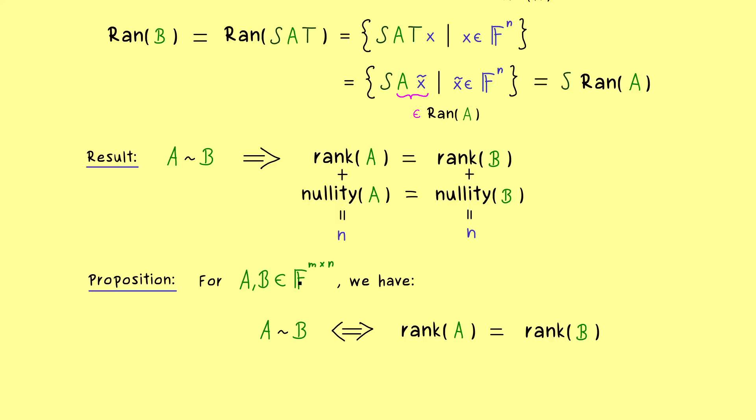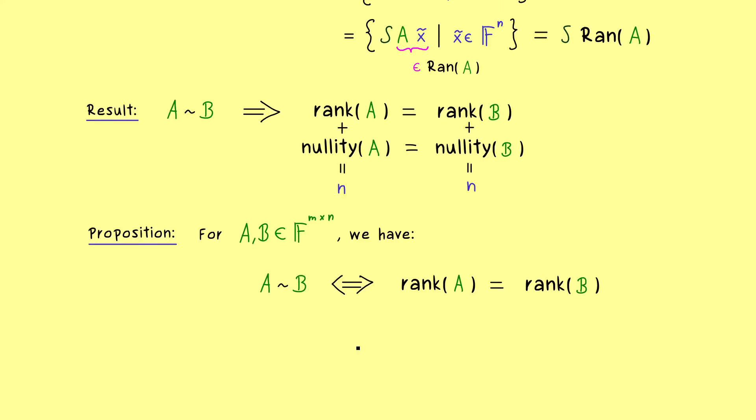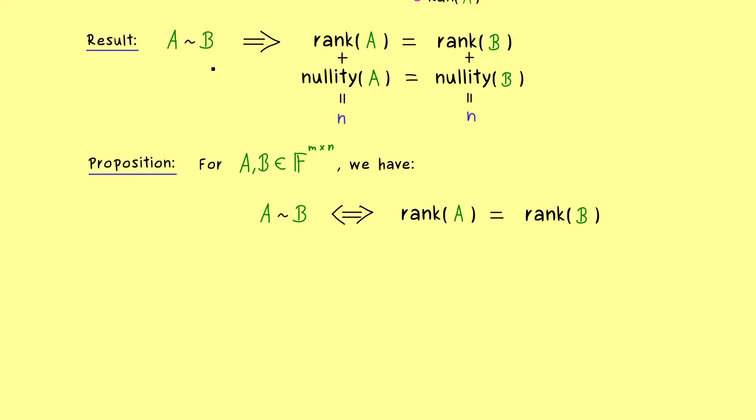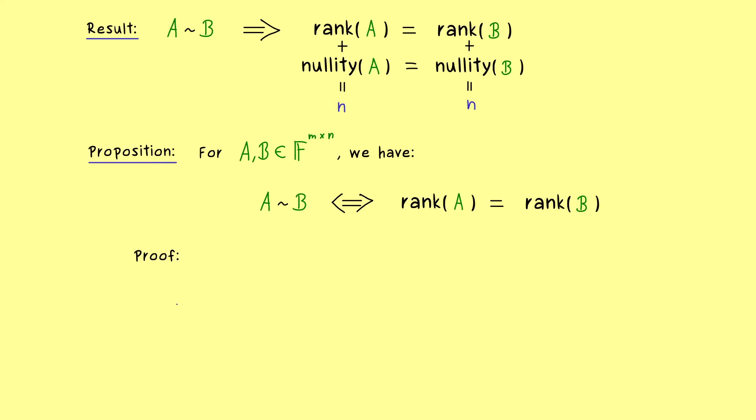And indeed the proof here is not so hard, because we only have to write down one implication anyway. And moreover, we already know how we can transform matrices with the Gaussian elimination. And in the whole process of the Gaussian elimination, we only multiply with invertible matrices.